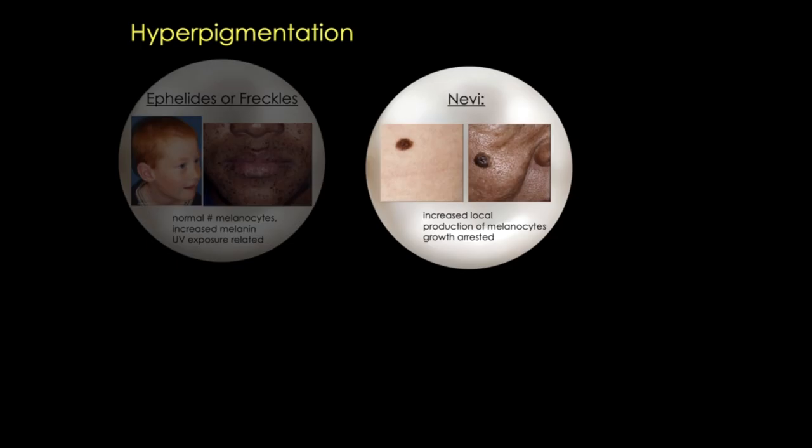Local hyperpigmentation can result in freckles or ephelides. Freckles are areas of the skin with a normal number of melanocytes but increased melanin, usually UV exposure-related. Here you can see two examples: one in a patient with light skin and one in a patient with dark skin. We also have nevi—moles—where we do see increased local production of melanocytes, so there are more melanocytes in a nevus versus a freckle. Again, I'm showing two nevi, one on light skin and one on darker skin.